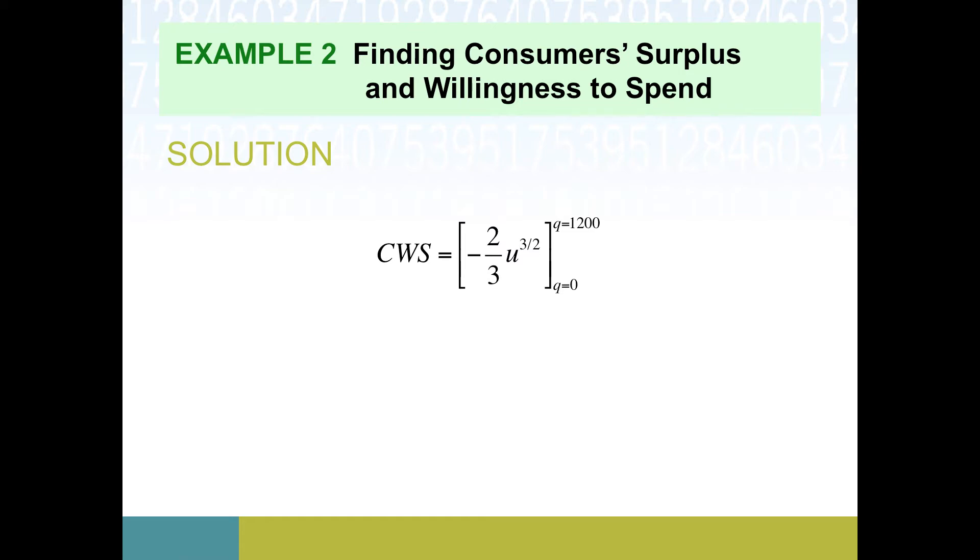Just remember that this was u to the one-half, so when the power goes up by one, it's going to go up to three-halves. We divide by that new power, so dividing by three-halves is the same as multiplying by two-thirds. And then we had that negative factor from the differential substitution too. I'm still reminding myself because we're in u territory right now. I'm still reminding myself that it's actually q values that eventually we want to plug in.